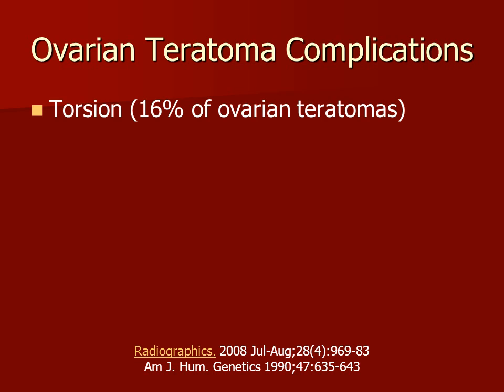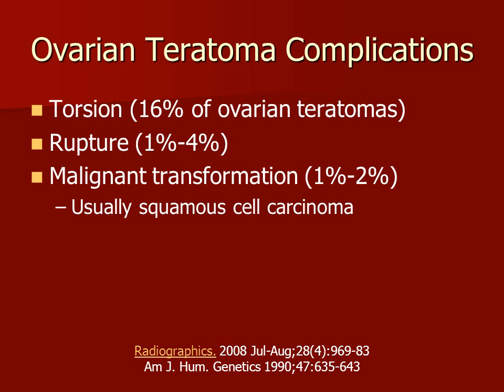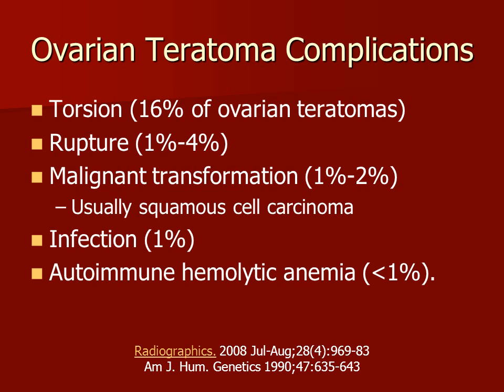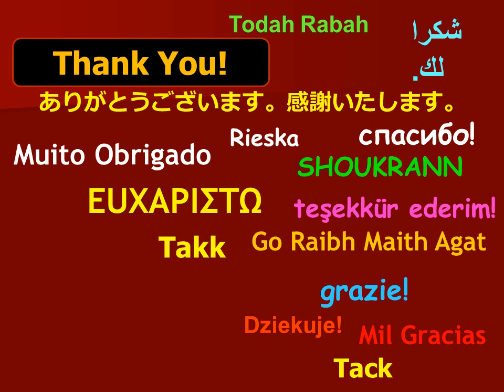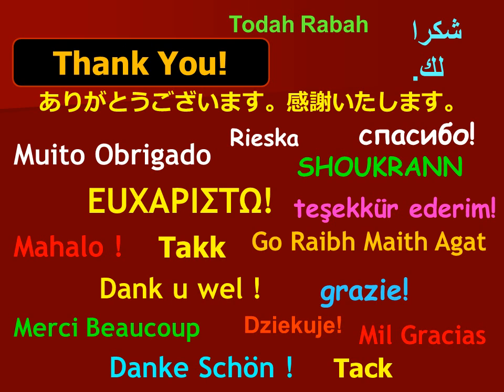Ovarian teratomas may be complicated by torsion, by rupture into the peritoneal cavity. Malignant transformation is uncommon and is usually a squamous cell carcinoma developing from the dermal elements. They may become infected, and some patients will develop an autoimmune hemolytic anemia. This has been a patient who had appendicitis and a left lower quadrant ovarian well-differentiated teratoma. I'm Jim Smyrniotopoulos, and I thank you for your attention.